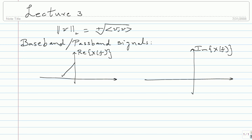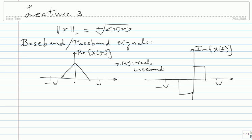The imaginary part is also going to be similar, but it will have odd symmetry around the origin, and it will again die out between minus W and W. That's how the spectrum will look for a real baseband signal. Since x(t) is real, it's enough to specify the spectrum for positive frequencies — you don't need to specify the negative frequencies separately.